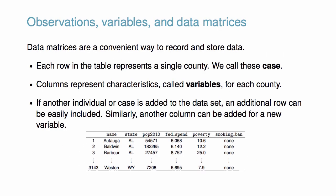Data matrices are a convenient way to record and store data. Each row in the table represents a single county — we call these cases or observations. The columns represent characteristics, called variables, for each county. Fortunately, if another case is added to the dataset, an additional row can be easily included. Similarly, another column can be added for a new variable.